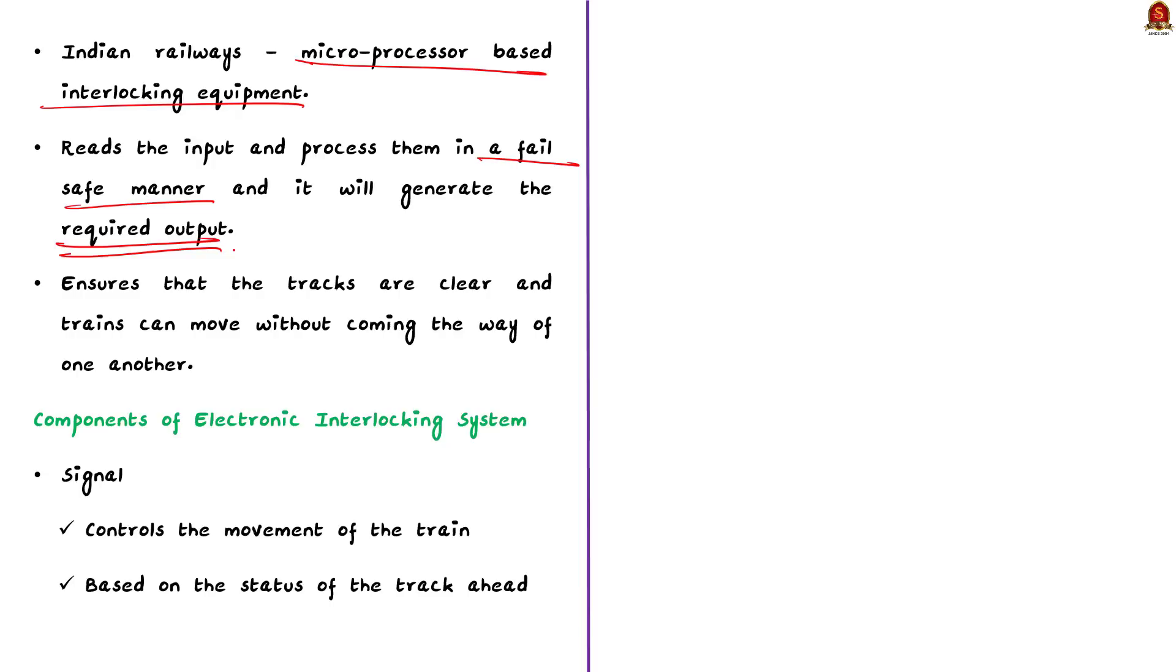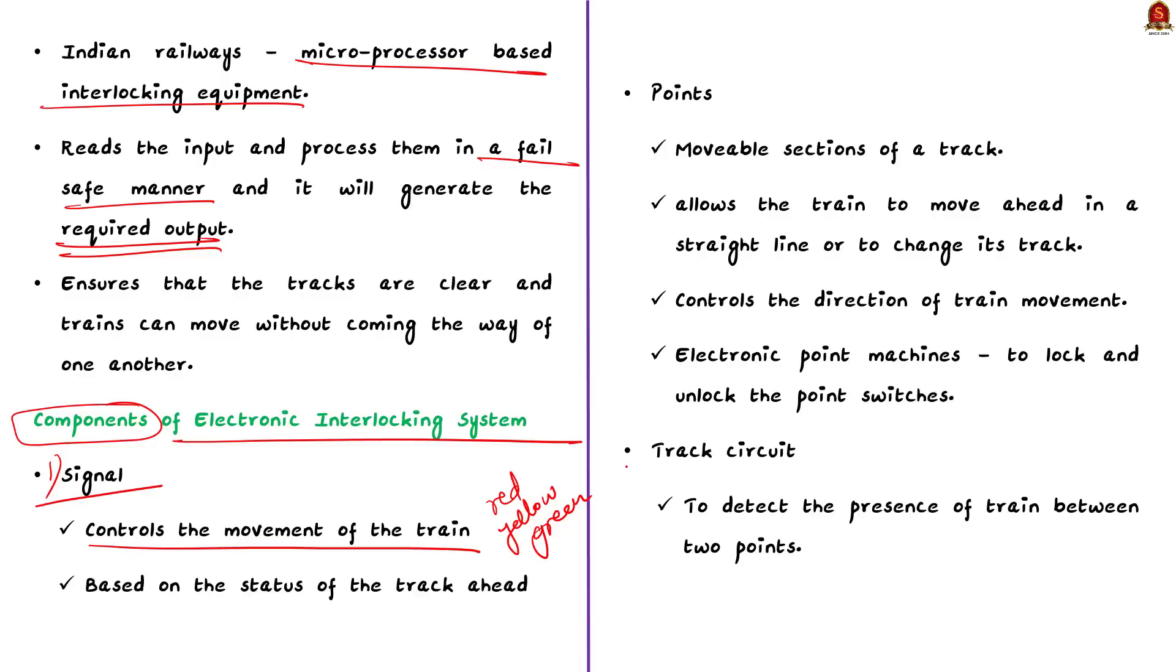Now, let's take a closer look at the components of this electronic interlocking system. The first component is the signal. Signals are crucial for controlling train movement. They use a combination of colored lights such as red, yellow and green and this indicates whether a train can proceed or should stop. Signals are positioned along the tracks and are controlled by the interlocking system. The second component is the point. Points are also known as switches or turnouts. They are movable sections of the track. They allow trains to move either in straight line or switch to a different track. The interlocking system controls the direction of train movement by locking and unlocking the point switches. The electronic point machines are only used for this purpose.